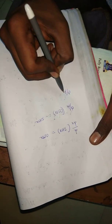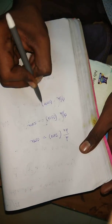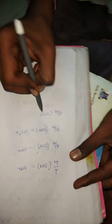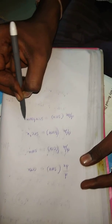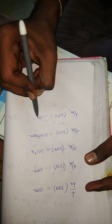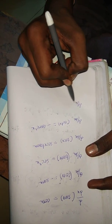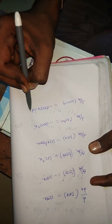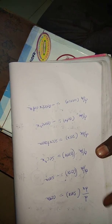Now let's write the trigonometric differentiation formulas. d/dx of sin x = cos x. d/dx of cos x = −sin x. d/dx of tan x = sec²x. d/dx of sec x = sec x · tan x. d/dx of cot x = −cosec²x. d/dx of cosec x = −cosec x · cot x. These are the important trigonometric formulas.